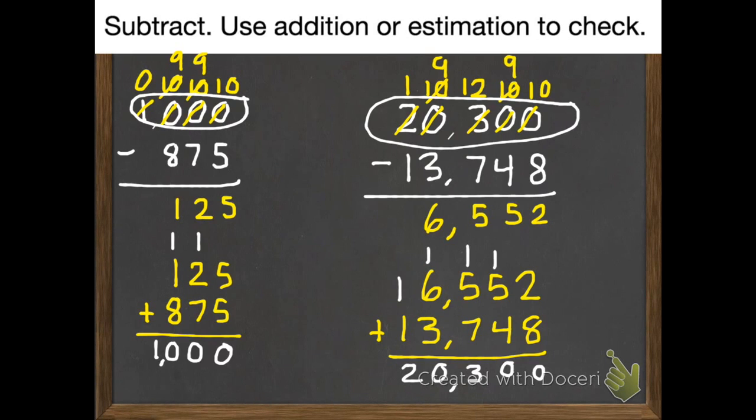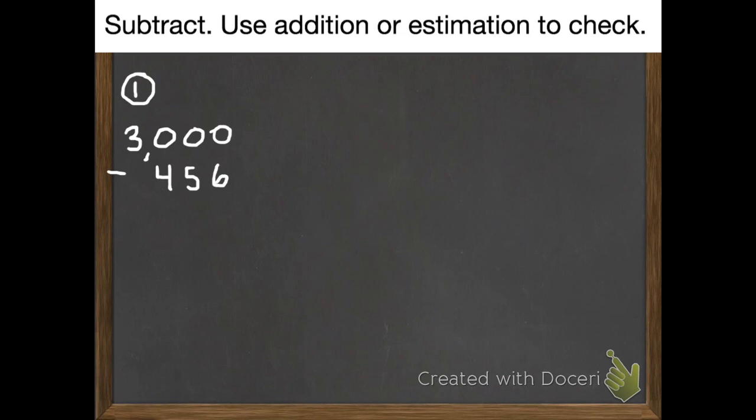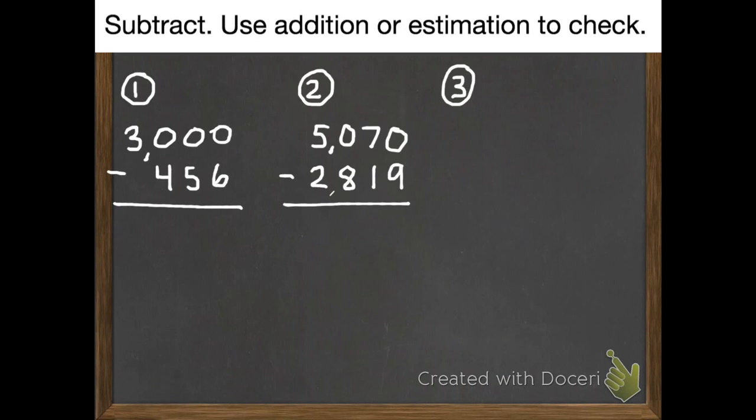So now you're ready for three problems that you'll do and bring to me in class tomorrow. Number one: 3,000 subtract 456. Number two: 5,070 subtract 2,819. And number three: 12,000 subtract 8,734. Thank you for listening and have an amazing night.